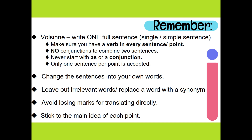Remember, you have to write one full sentence — it's normally a simple sentence. Make sure you have a verb in every sentence or point. No conjunctions. Do not combine two sentences. Never start with 'as' or a conjunction. Only one sentence per point is accepted. Change the sentences into your own words if you can. I will give you a tip in a moment on how to avoid trying to change sentences if you struggle with Afrikaans. Leave out irrelevant words. Avoid losing marks for translating directly. I prefer using direct quotes, but I will show you how much you are risking in losing, and you can make the decision. Stick to the main idea of each point.